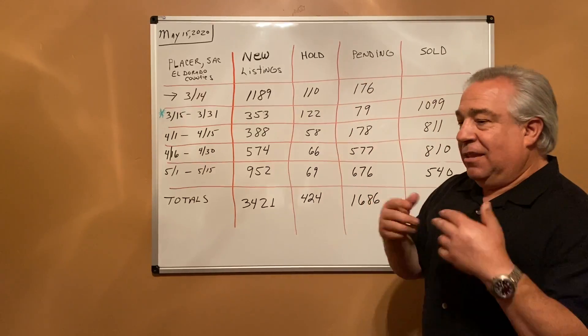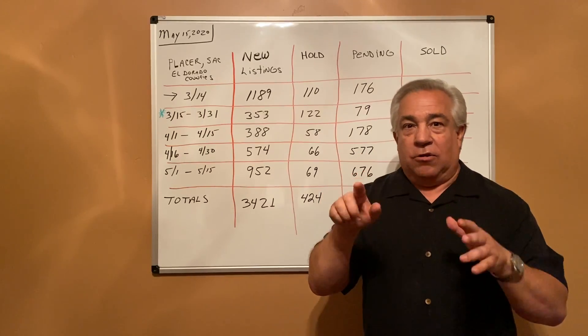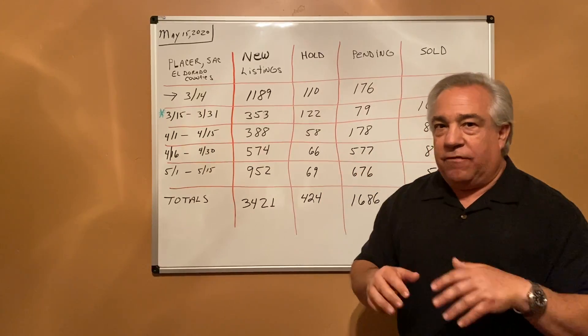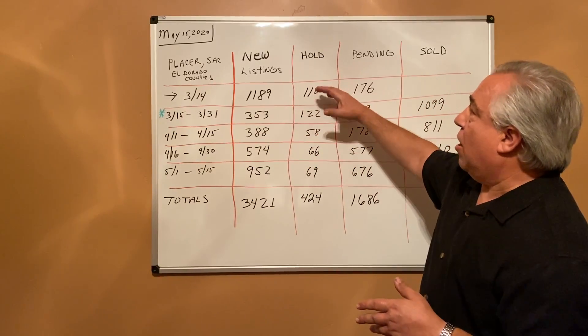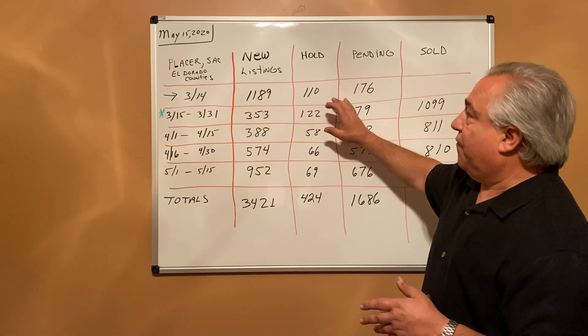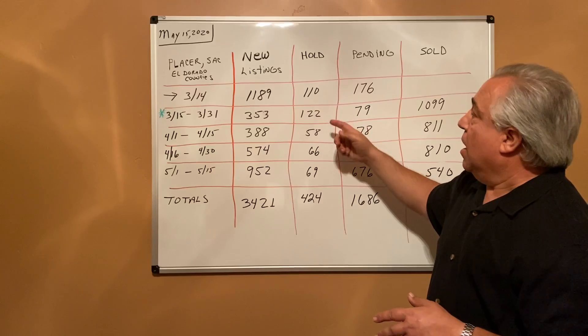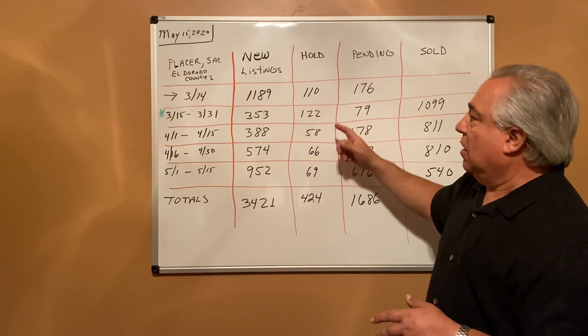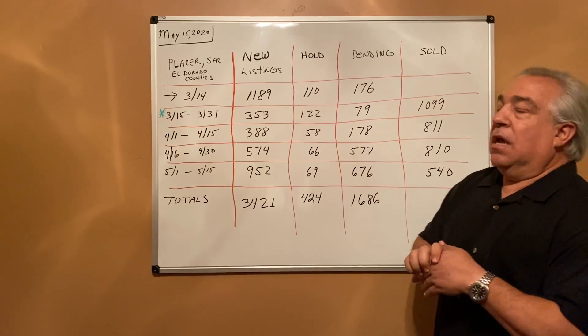Hold status—think of hold status as the seller kind of hits the pause button on their listing. They don't fully take it off the market but they don't want it shown. Prior to March 14th we had 110, and then the first two weeks in March we had 122, so that was a big jump. Then it dropped down to 58, and then the last 30 days, 66 and 69.